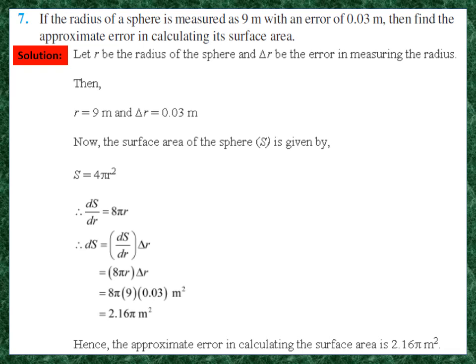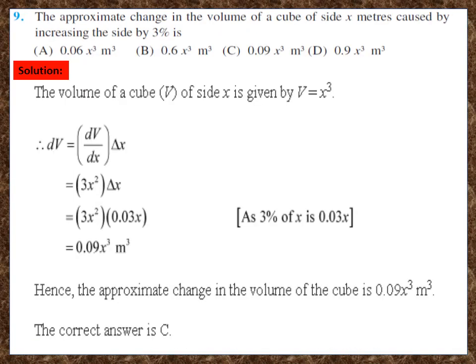Pause and note down the solution. Next, question 9: find the approximate change in the volume of a cube of side x meters caused by increasing the side by 3%. The volume of a cube is V = x³. So dV = (dV/dx) × delta x = 3x² × delta x. Delta x is 3% of x, that is 0.03x. So dV = 3x² × 0.03x = 0.09x³. Therefore the approximate change in the volume is 0.09x³, which is option (c).